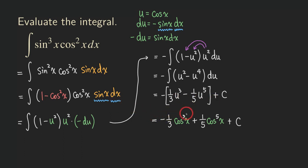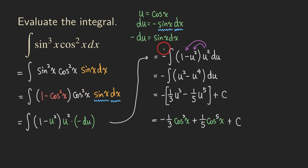This problem is a u-substitution, but it requires you to identify which power of sine or cosine is odd so you can reserve a copy. After reserving a copy, you have an even power left, and you can use the Pythagorean identity to convert it to the other function. In this case, sine squared x becomes 1 minus cosine squared x. The reserved copy is used to make the substitution with du, and after that the rest is straightforward.